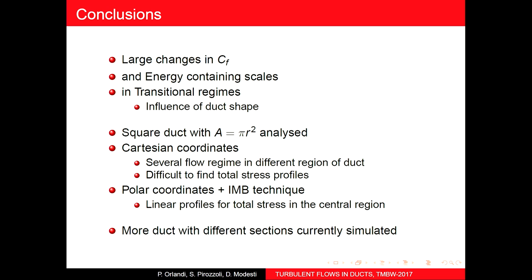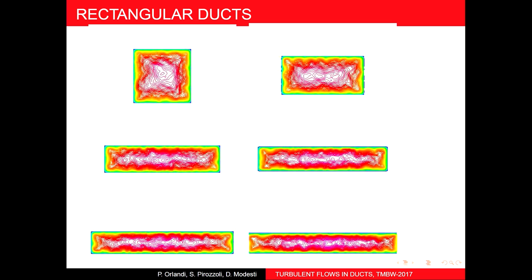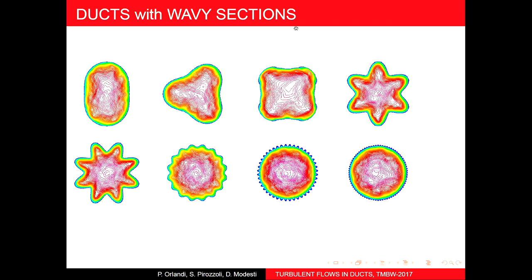We plan to do more simulations changing the aspect ratio of the square channel. We are also going to analyze corrugated pipes and riblets — the riblets could enable drag reduction. So we have the DNS tool to better understand wall turbulence in all these configurations. That's it — it's a work in progress. Thank you very much.